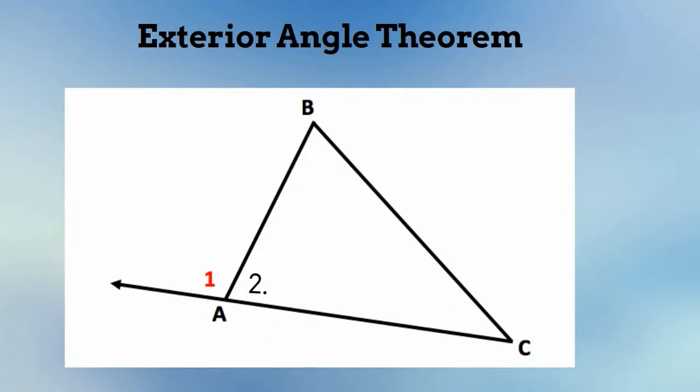The exterior angle theorem states that the exterior angle is equal to the sum of the measure of the two non-adjacent interior angles. An adjacent angle is an angle that shares a common vertex and side, like angles 1 and 2.